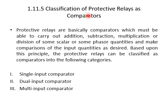The comparators must be able to carry out addition, subtraction, multiplication, and division of scalar or phasor quantities, and make a comparison of the input quantities as desired. Depending upon the principle, relays can be classified as: single input comparator, dual input comparator, and multi-input comparator. In a single input comparator, there is only one input signal, known as a level detector. Such a comparator continuously monitors one electrical quantity and compares it with a certain constant quantity.